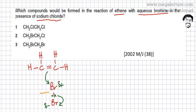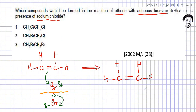This Br is going to break away. These electrons over here are going to get repelled and break away. In the next step, the positive bromine, which is +1, because this Br has broken away with its electrons making it −1, leaves a positive bromine.